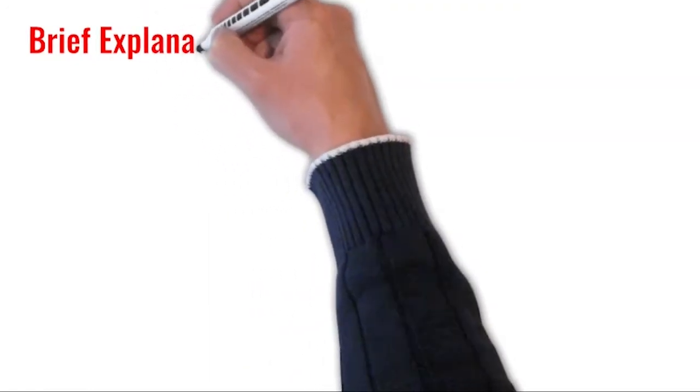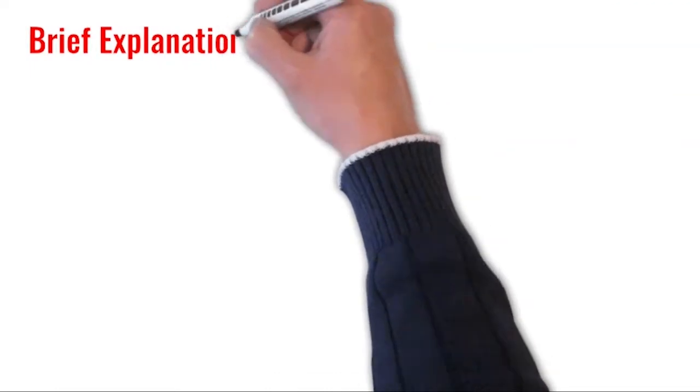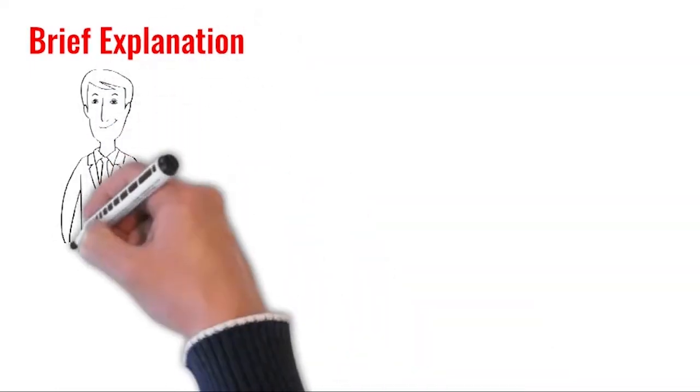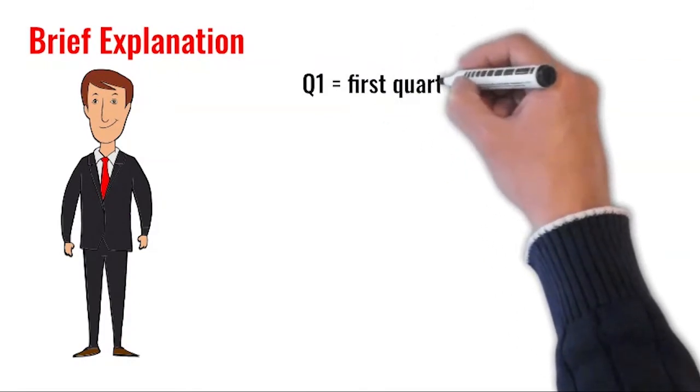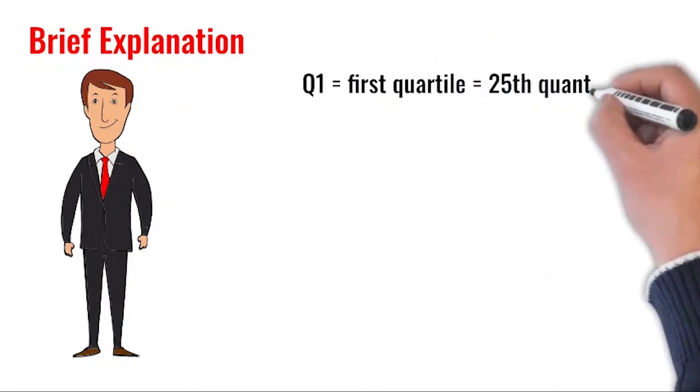Q1 as the first quartile or 25th quantile, Q2 as the second quartile or 50th quantile, Q3 as the third quartile or 75th quantile.